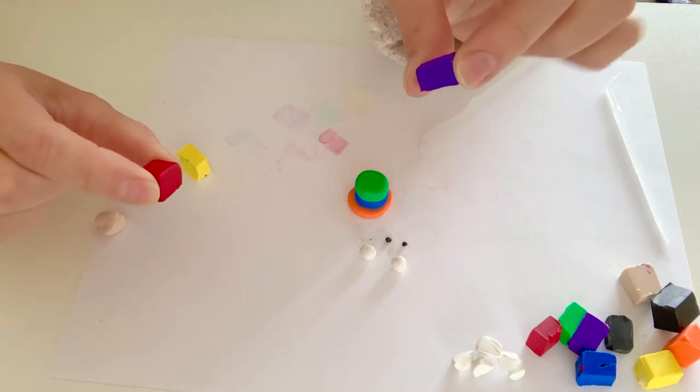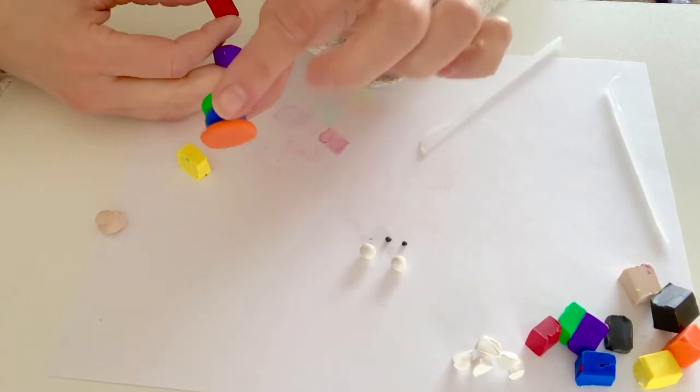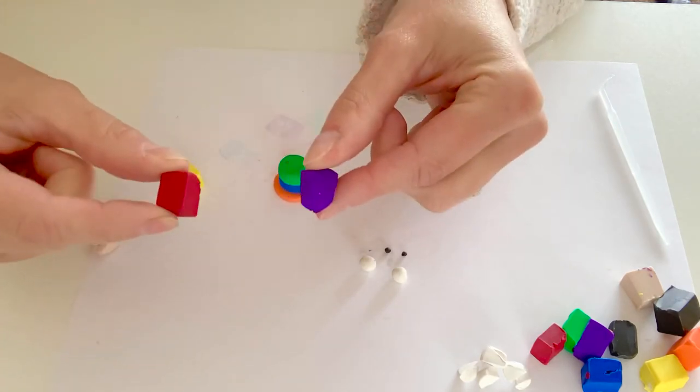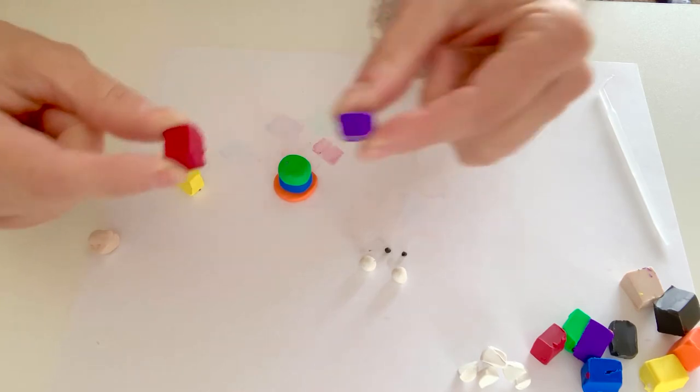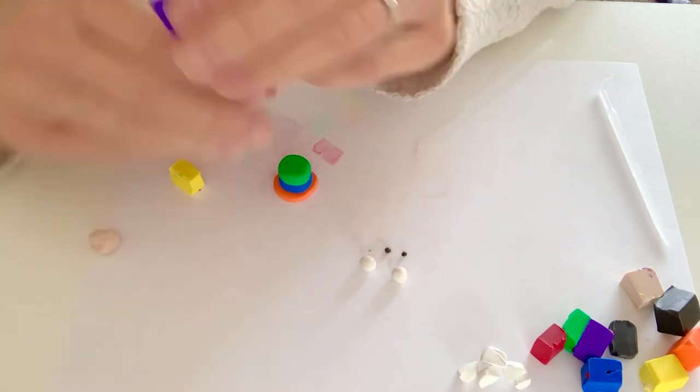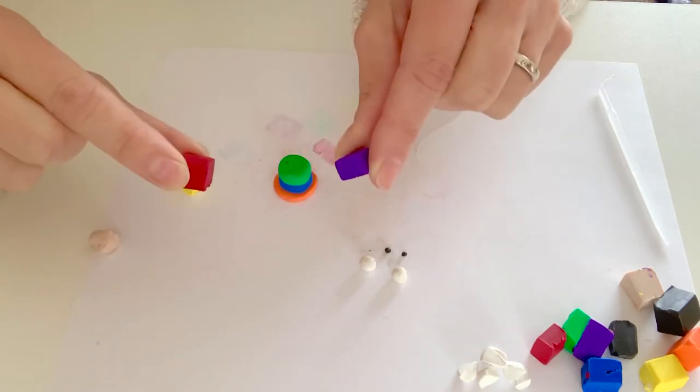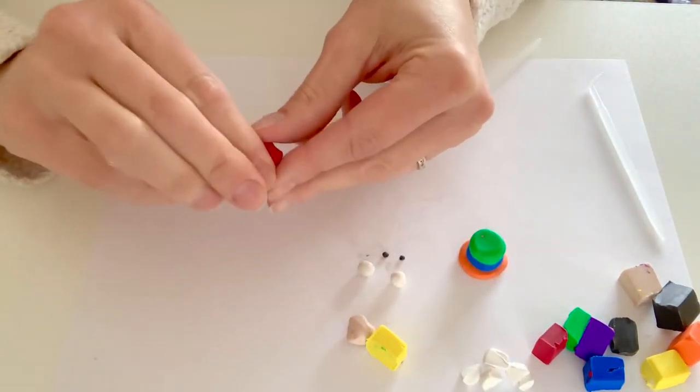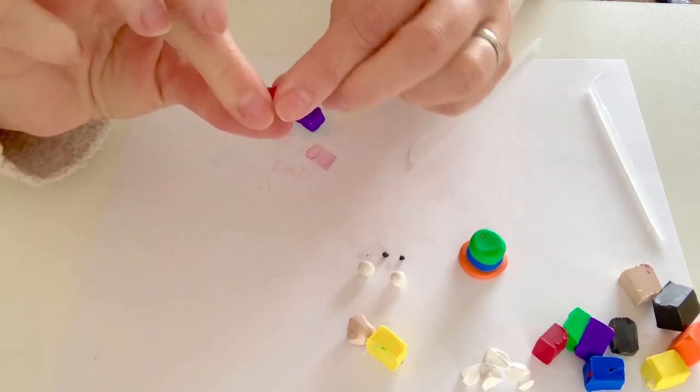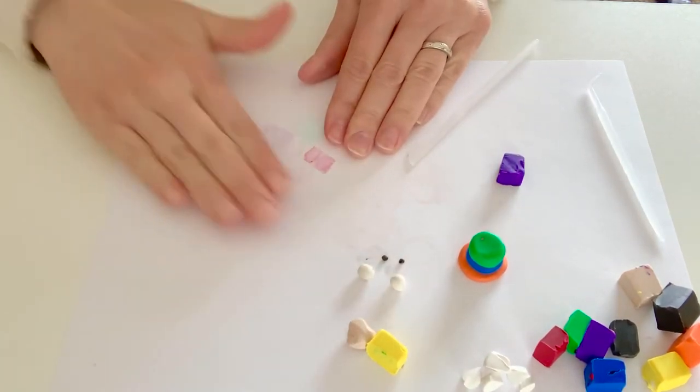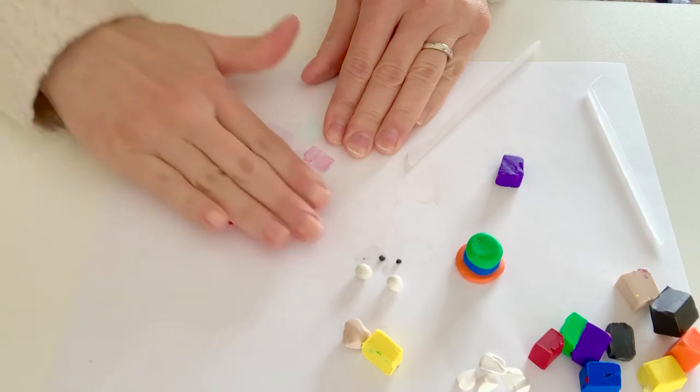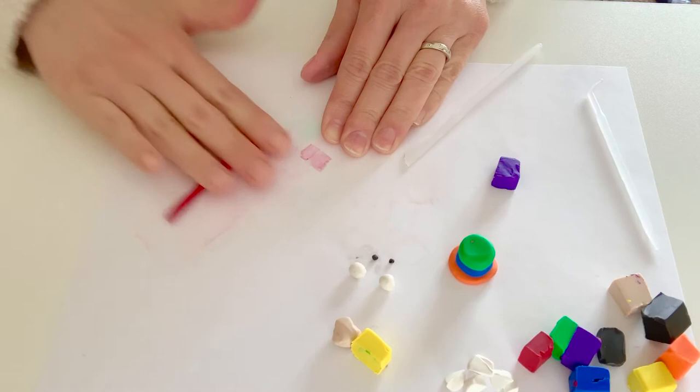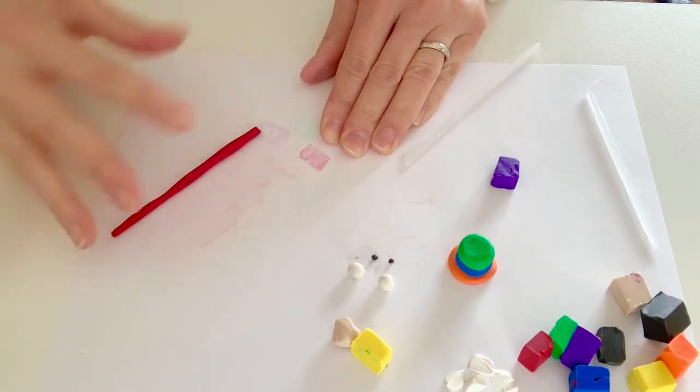I think what I'm going to do for the head, so this is going to be my body. For the head, I'm actually going to take the red and the purple and I am going to marble them. So I'm going to combine them so that they all swirl together and that's going to be the head of my monster. So to do that, you can take the first color, squish it between your fingers a little bit, roll it out into a snake.